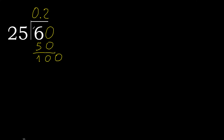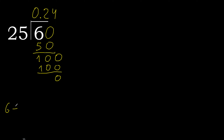25 multiplied by 4 is 100. It is not greater, subtract: 0. Therefore finish. 6 divided by 25 equals 0.24.